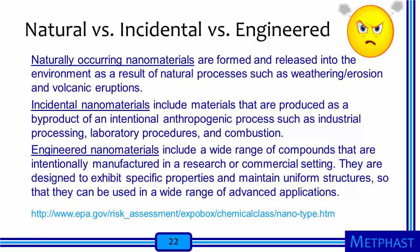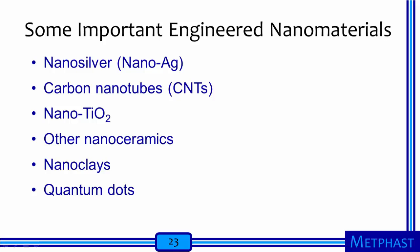Engineered nanomaterials are what most of us think about when we think about nanotechnology — materials intentionally manipulated for a purpose. You should keep in mind that natural materials and byproducts of what people do are sometimes referred to as nanomaterials, especially when we talk about nanoparticles. Next, we're going to talk about some of the important engineered nanomaterials, because these are what occupational hygienists are thinking about when we talk about nanotechnology health and safety for workers. We'll discuss nanosilver, carbon nanotubes, nanotitanium dioxide, other nanoceramics, nanoclays, and quantum dots.